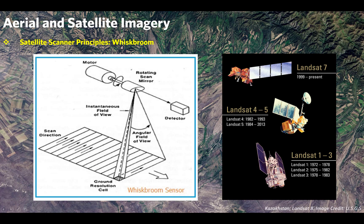The satellite scans across the track and moves along the track. The instantaneous field of view is what it's capturing at a given moment in time — that cell. The angular field of view is the entire width of the swath, and the swath width is measured at the nadir. The nadir is the point directly below the sensor system.